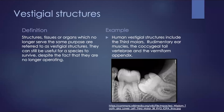Structures, tissues or organs which no longer serve the same purpose are referred to as vestigial structures. They can still be useful for a species to survive, despite the fact that they are no longer functioning as before. Vestigial structures are often the product of mutation, as the protein or multiple proteins required for the functioning of the structure, tissue or organ, are no longer created.